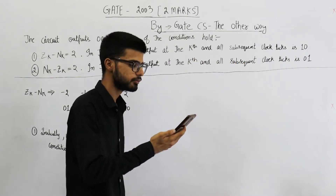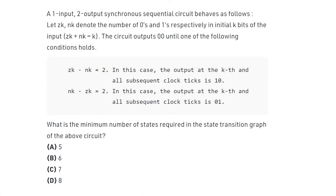Let me read the statement. A one-input, two-output synchronous sequential circuit behaves as follows. Let zk and nk denote the number of zeros and number of ones respectively in the initial k bits of the input — that is, zk plus nk equals k. The circuit outputs 00 until one of the following conditions hold: condition one is zk minus nk equals 2, in which case the output at the kth and all subsequent clock ticks is 10. Similarly, the next condition is nk minus zk equals 2, in which case the output at the kth and all subsequent clock ticks is 01. What is the minimum number of states required in the state transition graph of the above circuit?